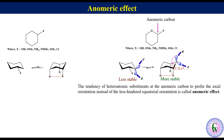This stabilizing interaction is stronger than the destabilizing 1,3-diaxial interaction, and as a result the chair conformation with axial substituent becomes more stable. If you look at the chair conformation with equatorial substituent, the Cx-sigma star is not aligned for overlap with the non-bonding orbital of the ring oxygen.